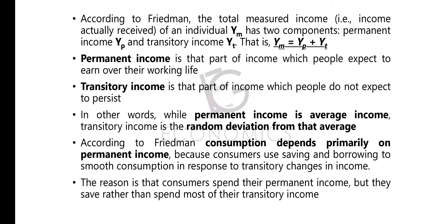According to Friedman, consumption depends primarily on permanent income. Consumers use saving and borrowing to smooth consumption in response to transitory changes in income. When there are transitory changes, either positive or negative, consumers adjust toward the average through saving or borrowing.